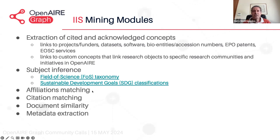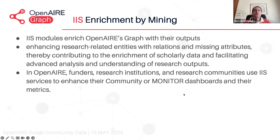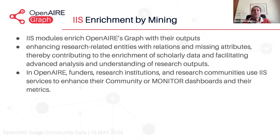There are also modules for affiliation matching, citation matching, document similarity, and metadata extraction. The IIS modules enrich the OpenAIRE graph with their outputs, enhancing research-related entities with relations and missing attributes, with the goal of contributing to enrichment of scholarly data and facilitating advanced analysis and understanding of research outputs. In OpenAIRE, funders, research institutions, and research communities use IIS services via the graph to enhance their community dashboards and metrics, because the graph and the mining is the backbone feeding those services.